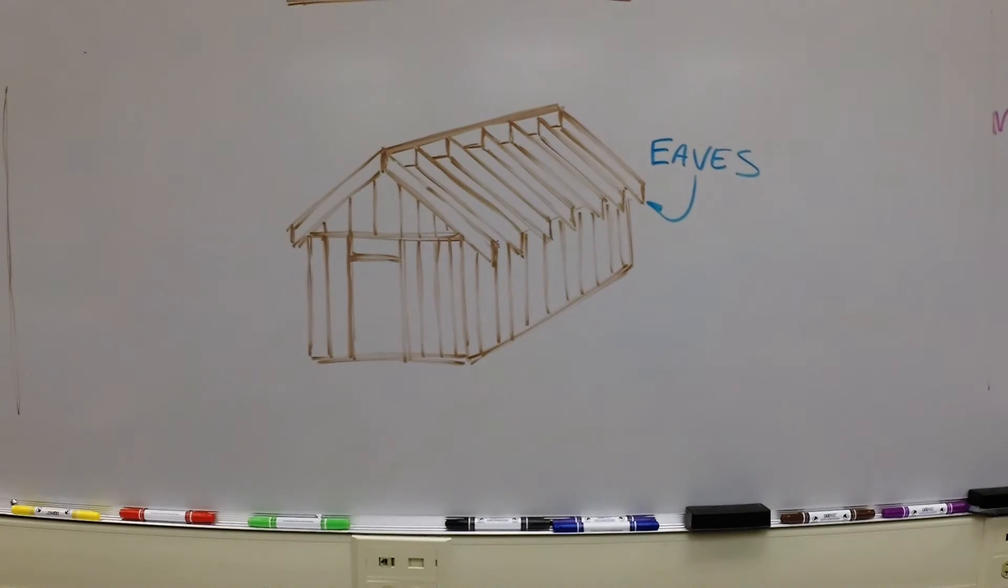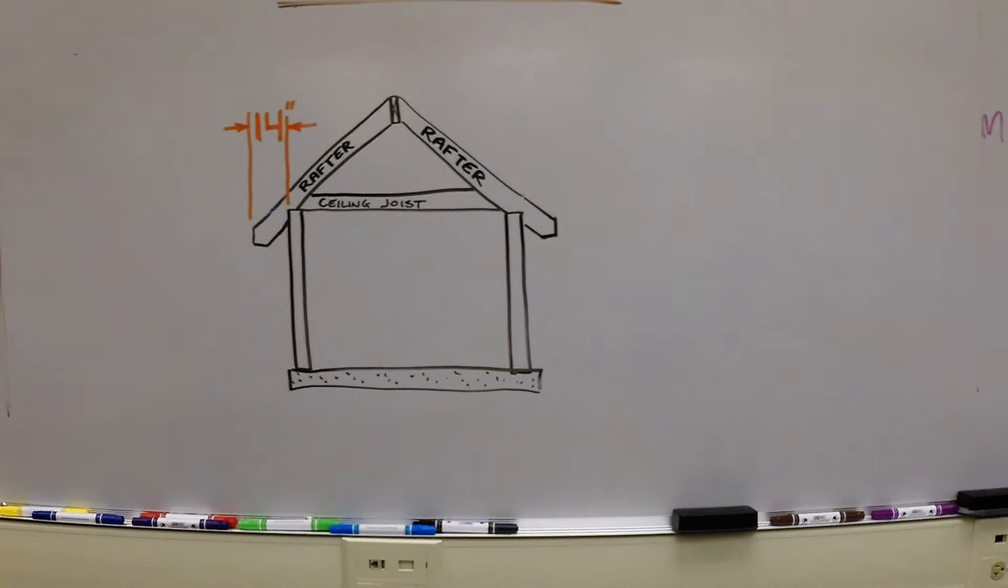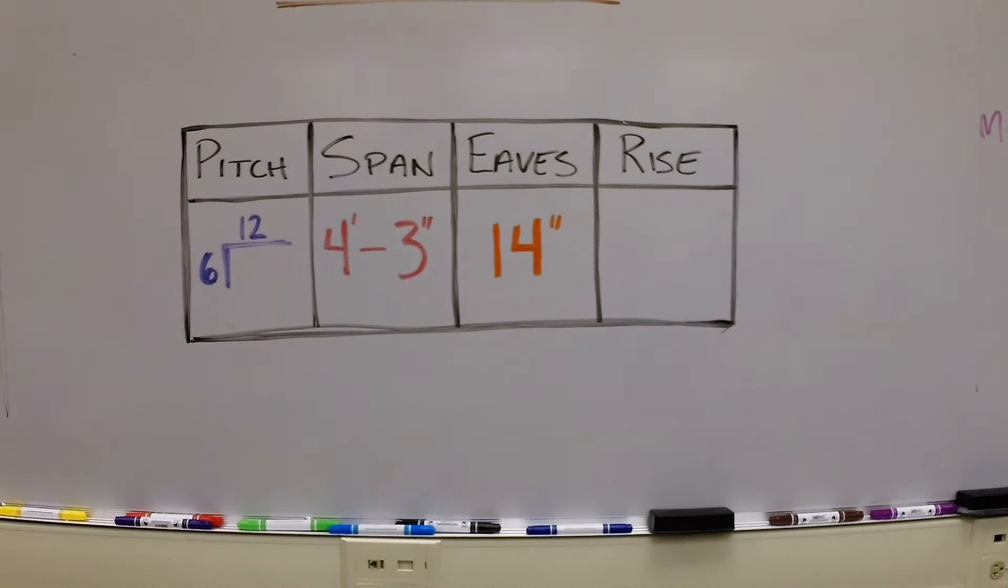The eaves are the part of the roof that extend beyond the wall, providing shade for windows in the summertime and carrying rainwater away from your walls. The length of eaves will vary, but for my project I'm working with 14 inch eaves.